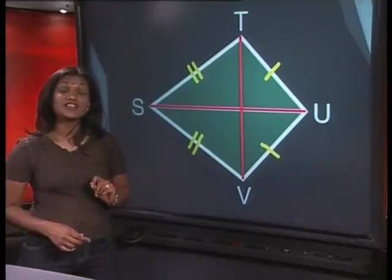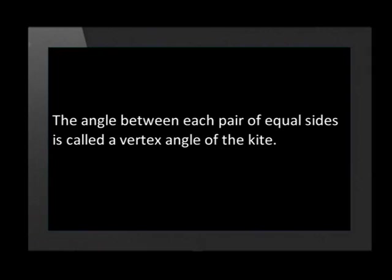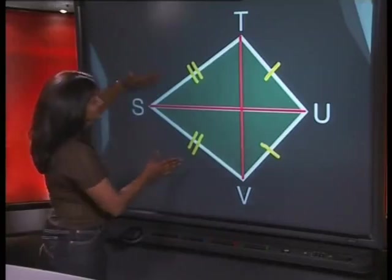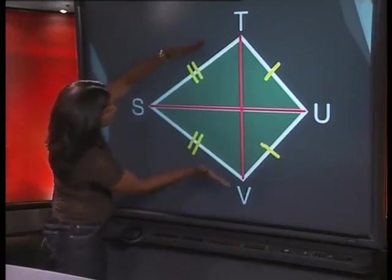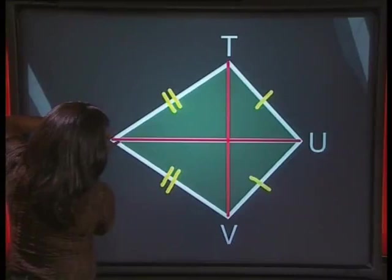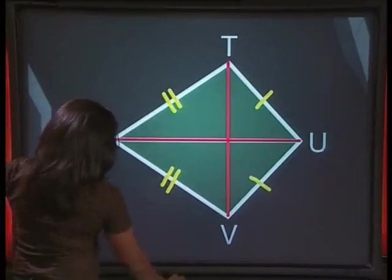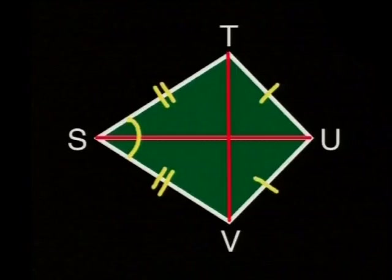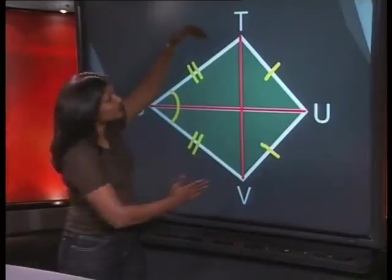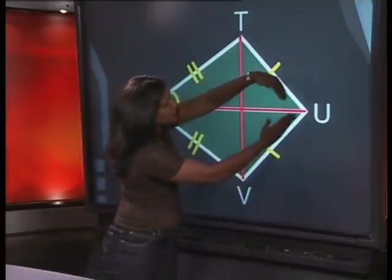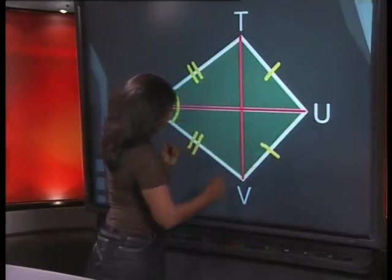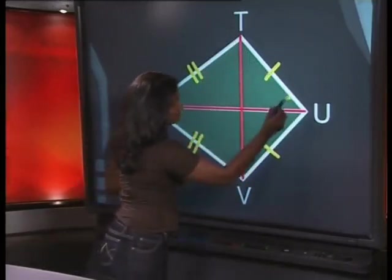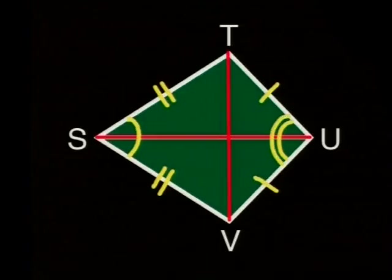Now, we need to discuss a new term. The angle between each pair of equal sides is called a vertex angle of the kite. Using the equal sides ST and SV, we find one vertex angle here, angle TSV. The angle between equal sides TU and UV is the angle TUV. And this angle is also a vertex angle.